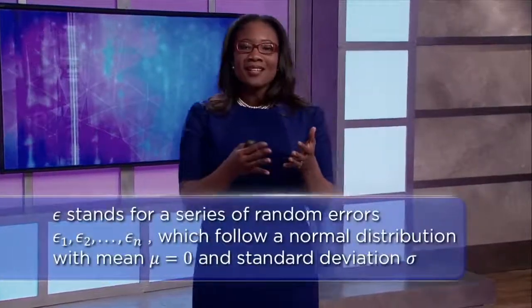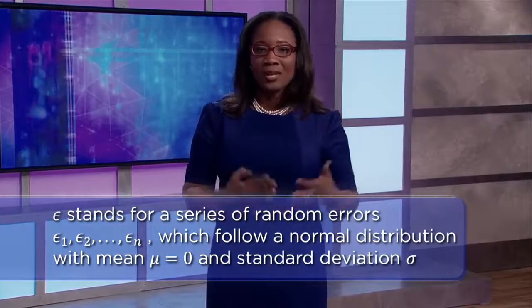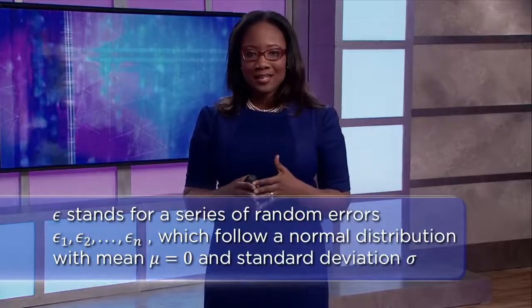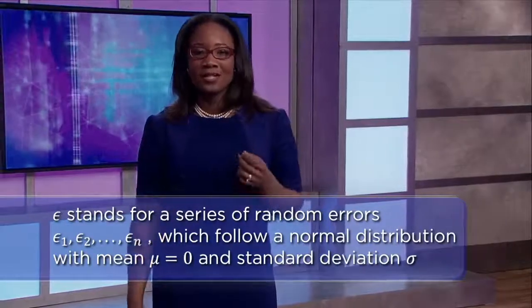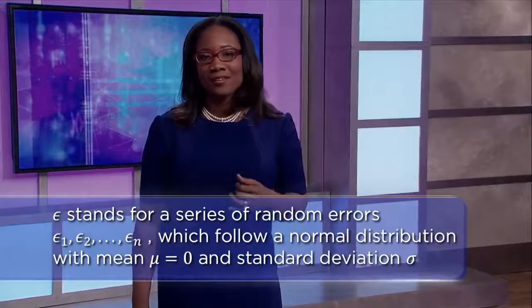ε stands for a series of random errors — ε₁, ε₂, all the way out to εₙ — and we assume these follow a normal distribution with mean centered at zero and some standard deviation σ. That's our first model assumption: normality of the residuals. The standard deviation σ doesn't vary for different values of x — this is the second assumption: constant variability. Thirdly, those epsilons are associated with observations that are independent of each other, so each ε value must be independent. Those are our assumptions, and we'll have to verify our data meets them.